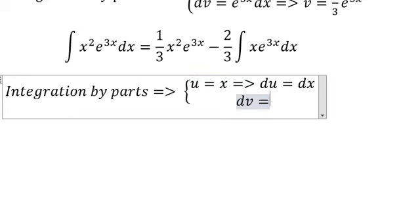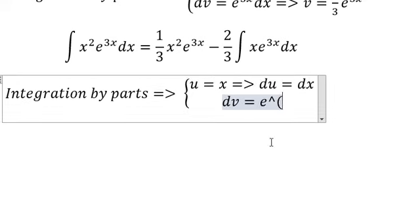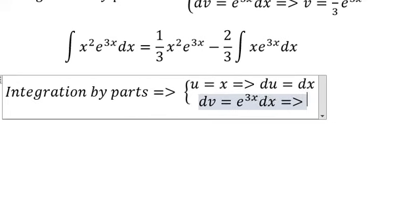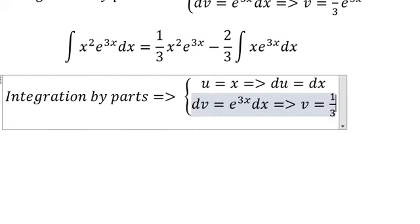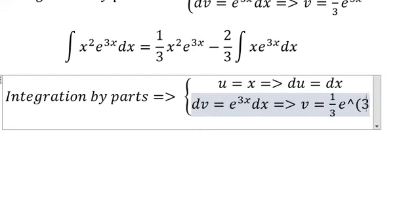And dv equals e power 3x dx. So v is 1 over 3 e power 3x.